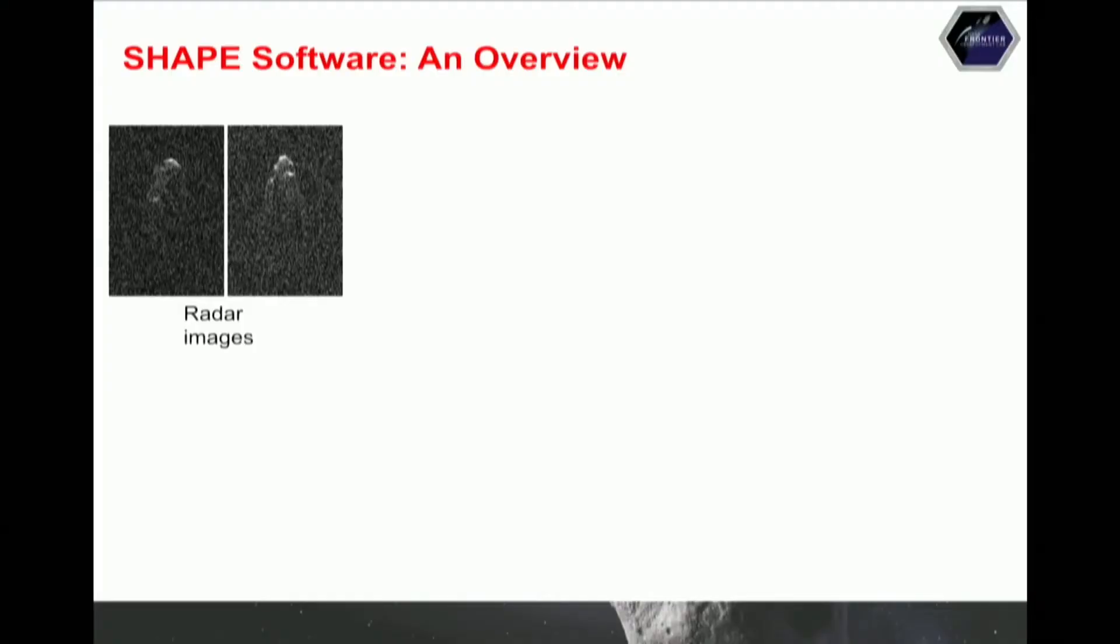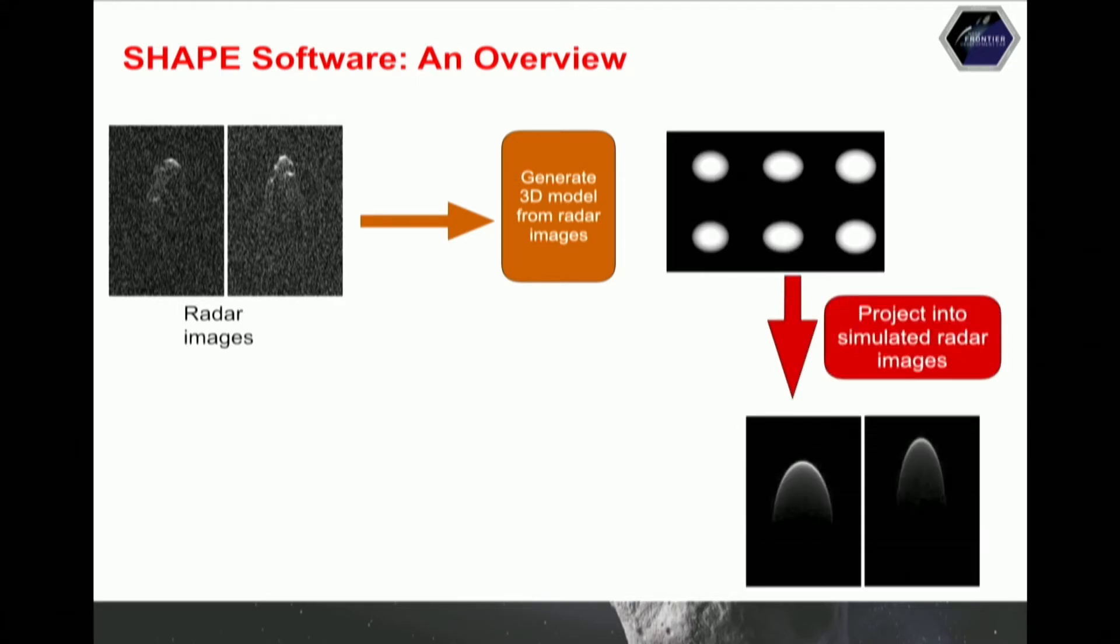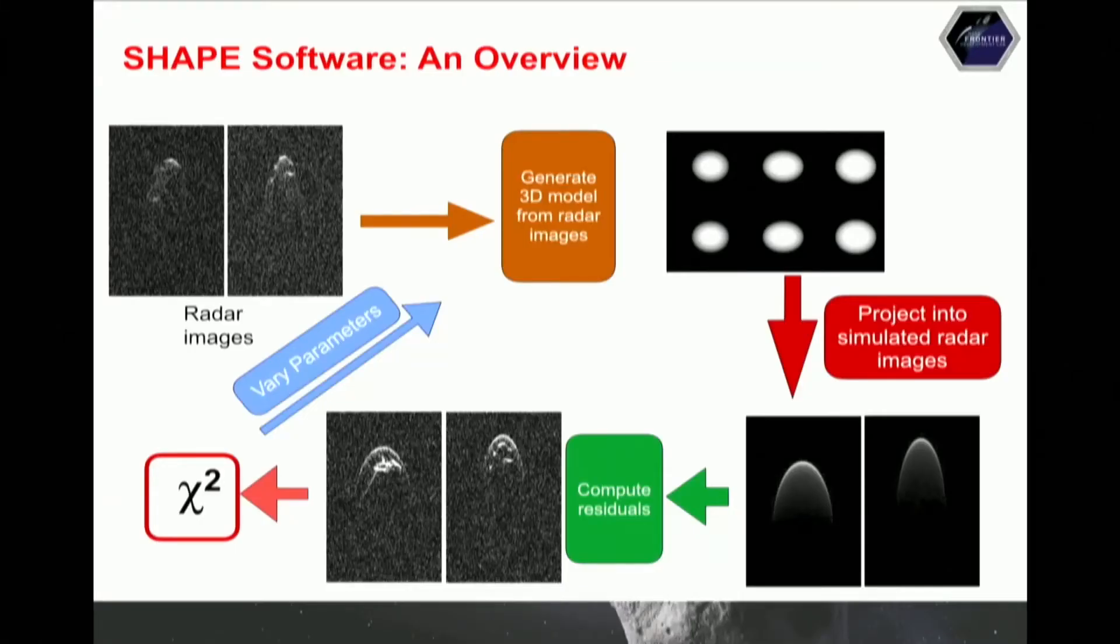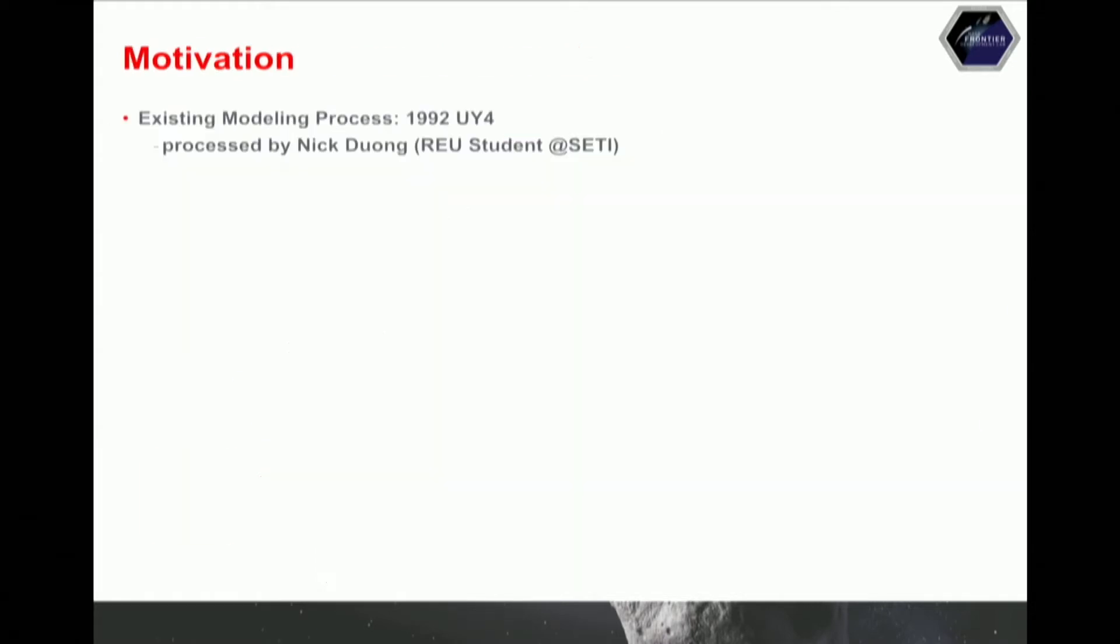As I mentioned, it takes radar images as an input. Then from these radar images, you create a 3D model. This 3D model is then projected into the radar space. So we get simulated radar images based on the 3D model. Then the Shape software calculates the difference between the input radar images, which were observed, and the simulated radar images. From these residuals, we get a chi-squared value. You can think of this chi-squared as an error that you want to minimize. So the Shape software is always looking for a minimum chi-squared. After calculating this chi-squared, the software will vary the input parameters and repeat this process until it varies all of the parameters that find a minimum chi-squared.